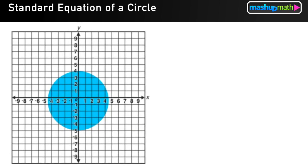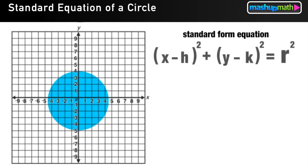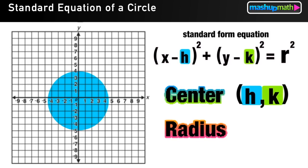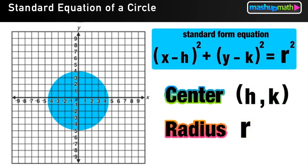We are going to be looking at circles on the coordinate plane and applying the standard form equation of a circle, which is not as intimidating as it looks. The only information we need is the location of the center and the length of the radius. The letters H and K represent the X and Y coordinates of the center point, and R represents the length of the radius. Keep that standard form equation handy because we'll be using it in the examples that follow.